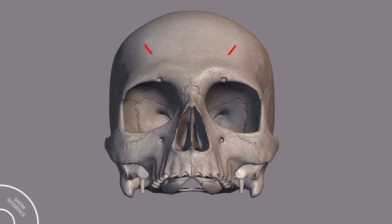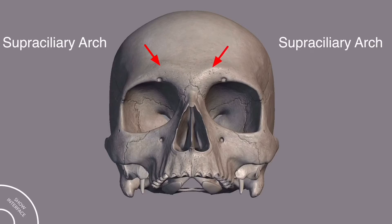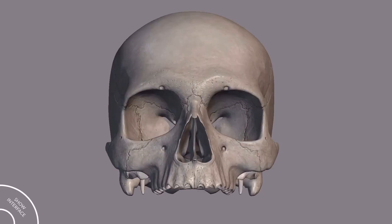Above the supraorbital margin is an elevation called the superciliary arch, and the imaginary meeting point of the two superciliary arches is called the glabella. Above the superciliary arch are present two more elevations — these are a little bit difficult to see and are called the frontal tuber.